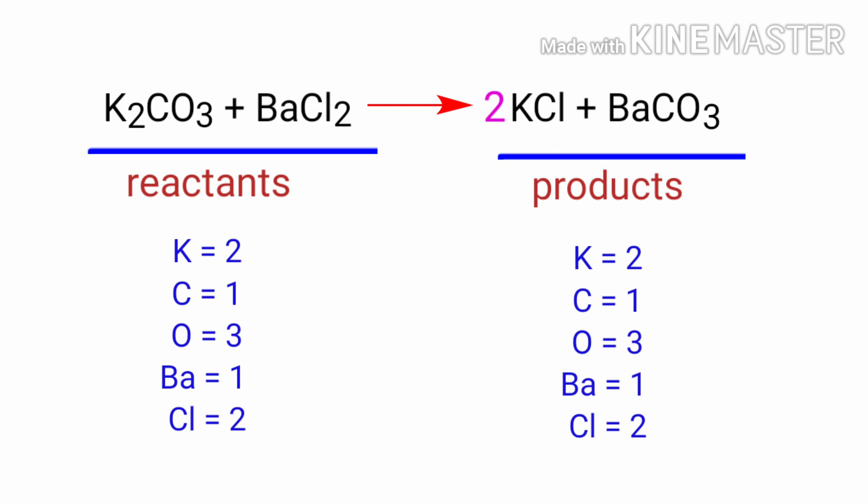The equation is now balanced. There are two potassium atoms, one carbon atom, three oxygen atoms, one barium atom, and two chlorine atoms on both sides.